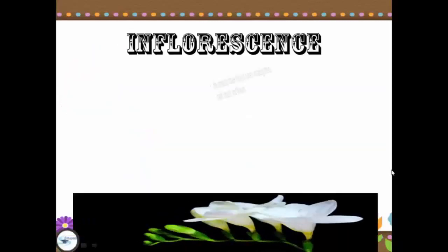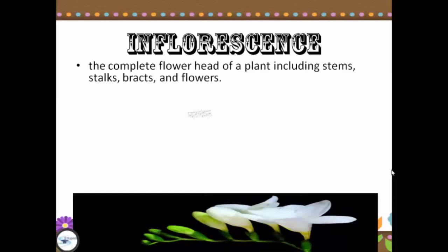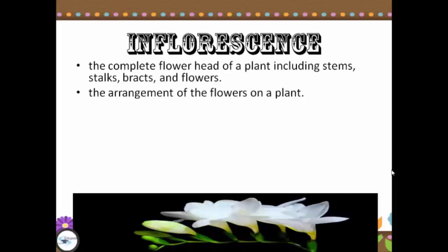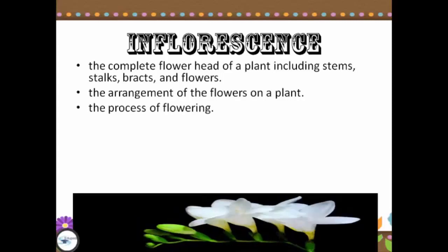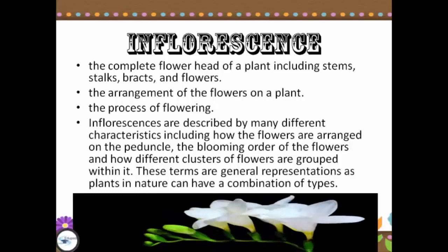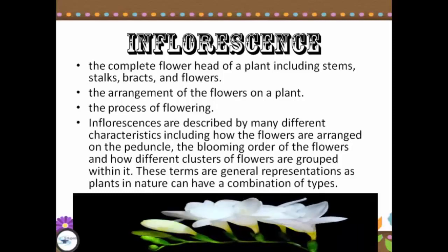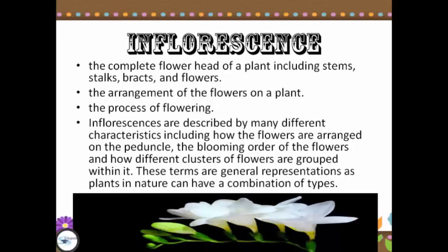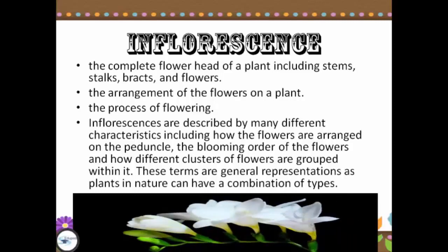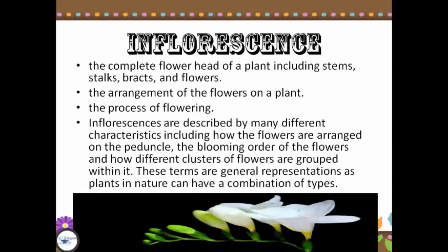When we say Inflorescence Flower, that is the complete flower head of a plant including stems, stalks, bracts, and flowers — the arrangement of the flowers on the plants and also the process of flowering. Inflorescences are described by many different characteristics including how the flowers are arranged on the pedicle, the blooming order of the flowers, and how different clusters of flowers are grouped within it. These terms are generally representations, as plants in nature can have a combination of types.